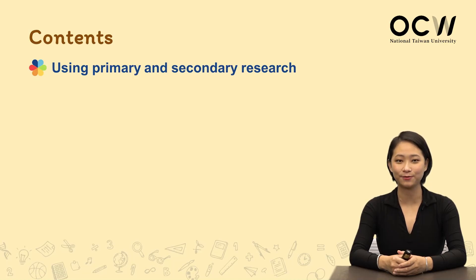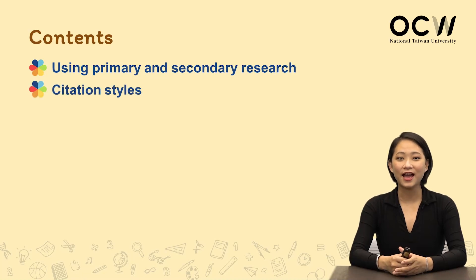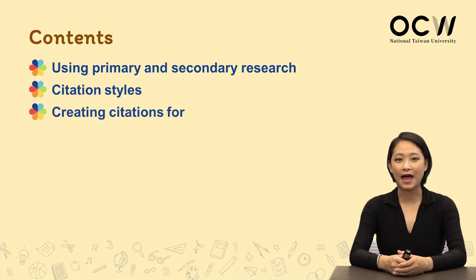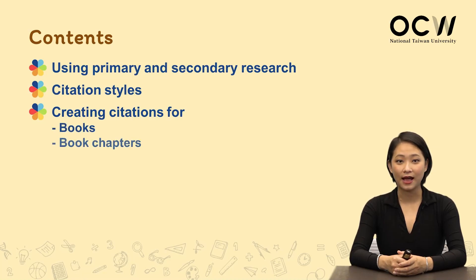In today's class, we have several goals. First of all, I'll introduce to you the differences between a primary and a secondary source. Then I'll go on to introduce the different types of citations used in different fields. Among all the different types of information you might want to cite, we picked out three major items: how to cite a book, how to cite a book chapter, as well as how to cite an article.